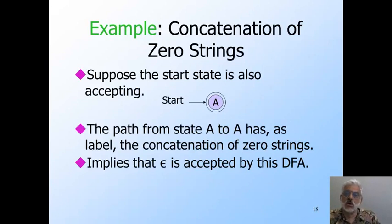But in this case, the path has no arcs, so its label must be the concatenation of 0 strings. That is, the empty string. That's great because it means that the empty string is accepted by this automaton. And since the automaton starts out in an accepting state before it reads any input, that makes sense.